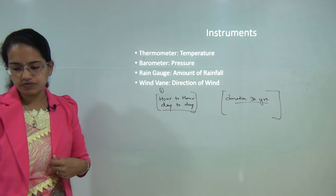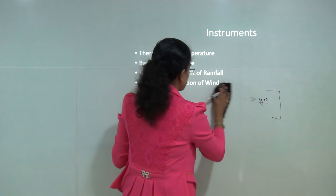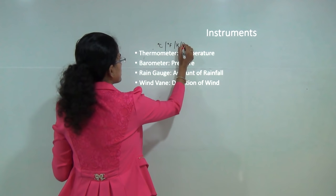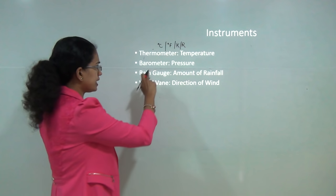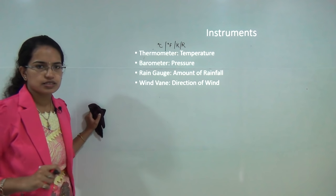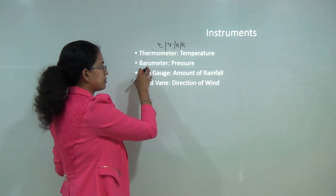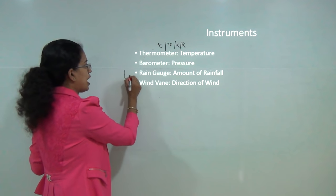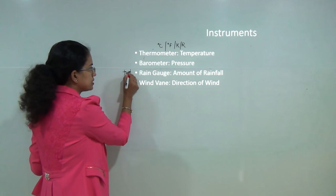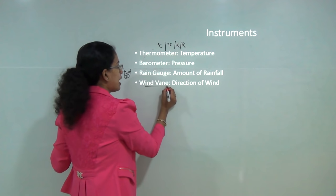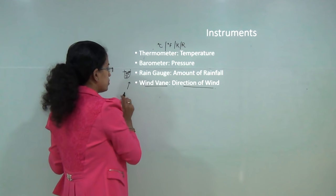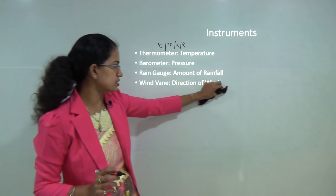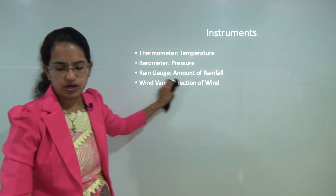There are various instruments we use to understand atmospheric phenomena. To measure temperature we use a thermometer, which can be in degrees Celsius, Fahrenheit, Kelvin, or Rankine. We use a barometer to measure atmospheric pressure — you have aneroid barometers and other types. A rain gauge measures the amount of rainfall. A wind vane gives the direction of wind by rotating based on wind direction. These are the four major instruments we must know when talking about the atmosphere.